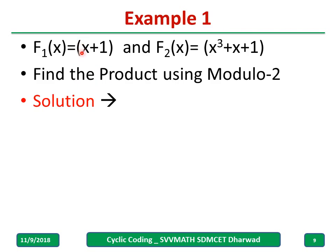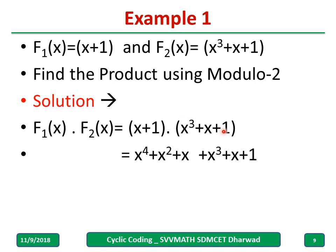Now if you multiply f₁(x) and f₂(x), how to write? Simply take X plus 1 and one more is X³ plus X plus 1, multiply, write down and now X plus X equals 0. Remaining you write down as it is. This becomes a multiplication of two polynomial.